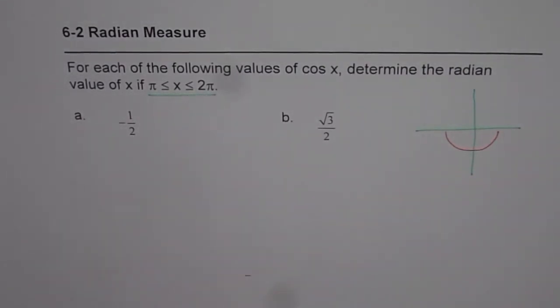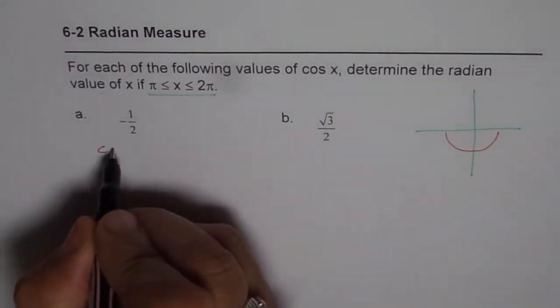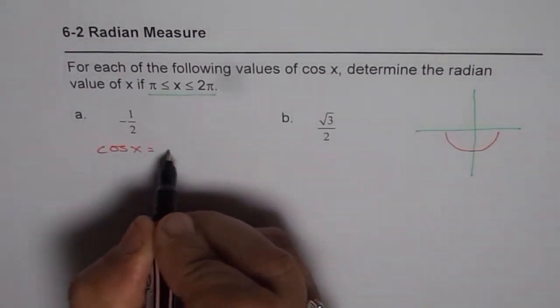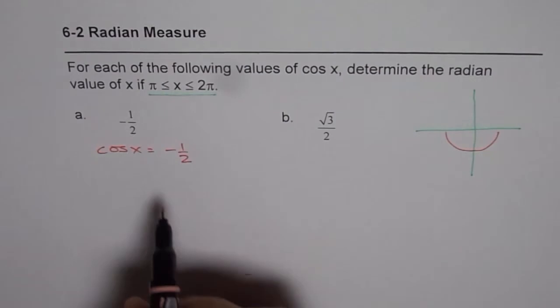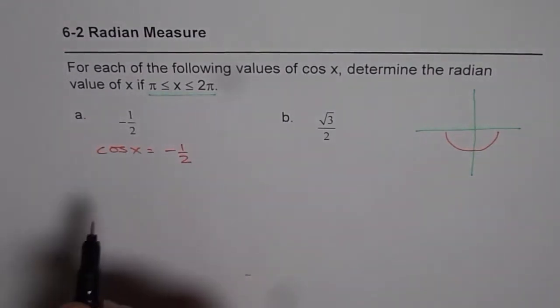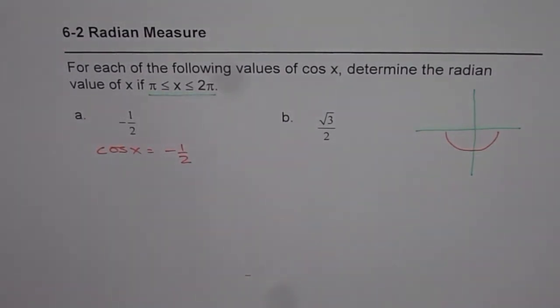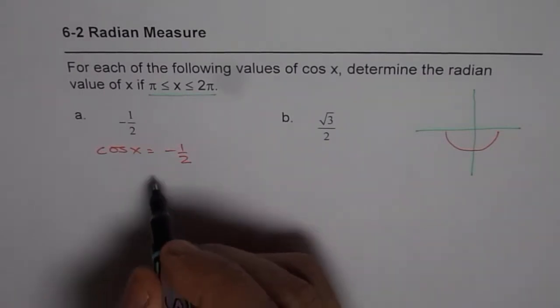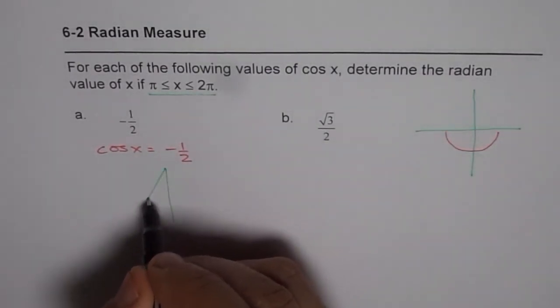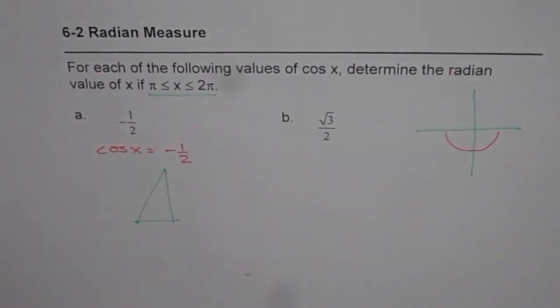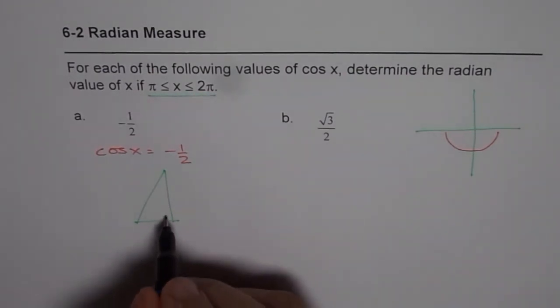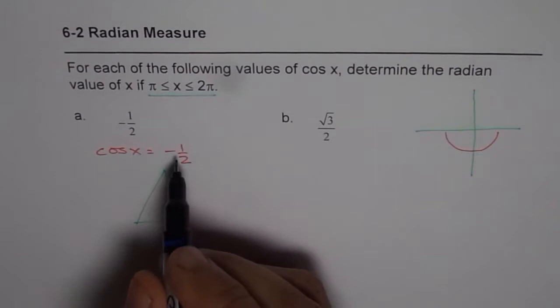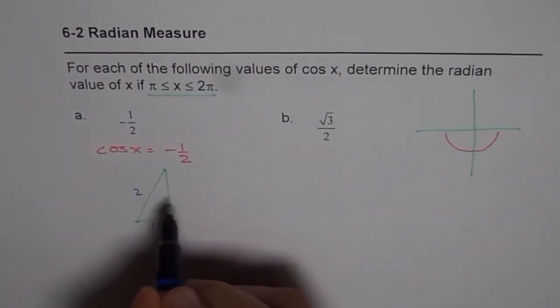The first one: cos x equals minus half. What should x be? You can use special triangles - remember 30, 60, 90 triangles? That helps to find this answer. Or you can use a calculator. Half reminds me of this triangle.